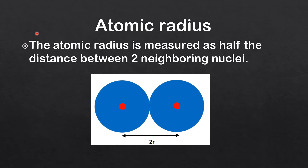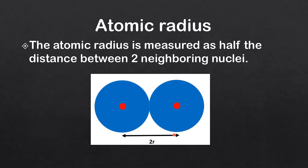We'll start by looking at how atomic radius is measured. The atomic radius is measured as half the distance between two neighboring nuclei. Here we have two atoms and two neighboring nuclei, shown as the red circles, and the atomic radius is measured as half the distance between them.